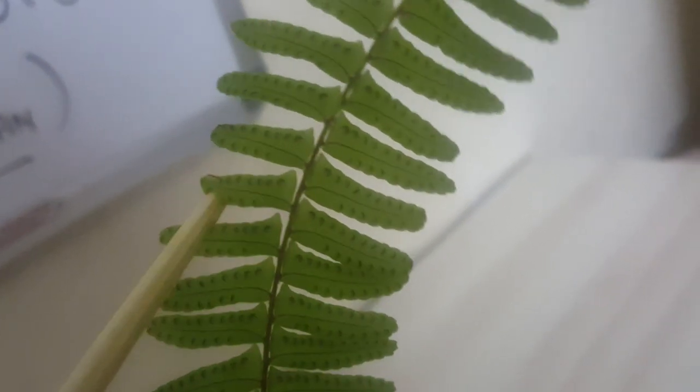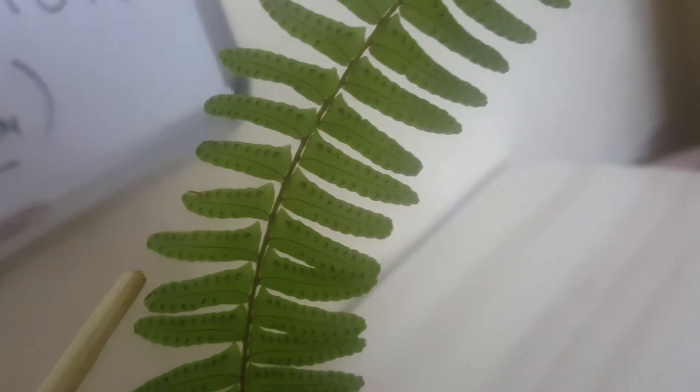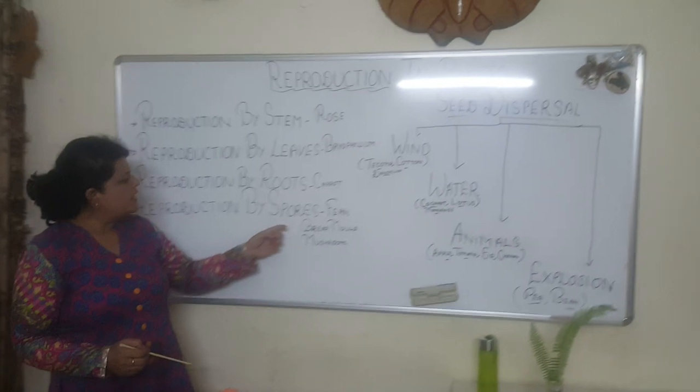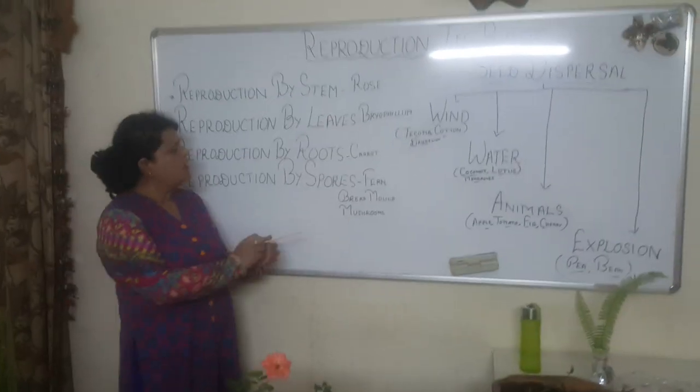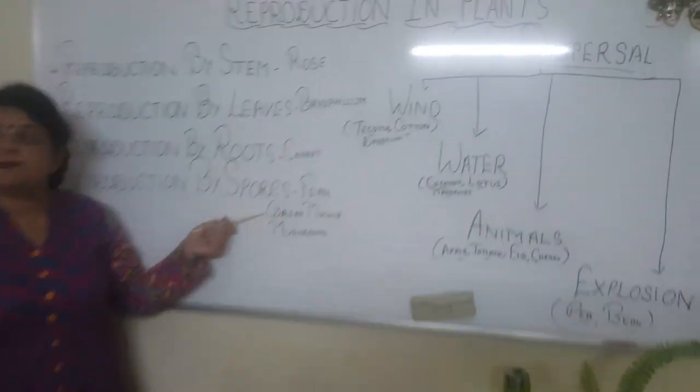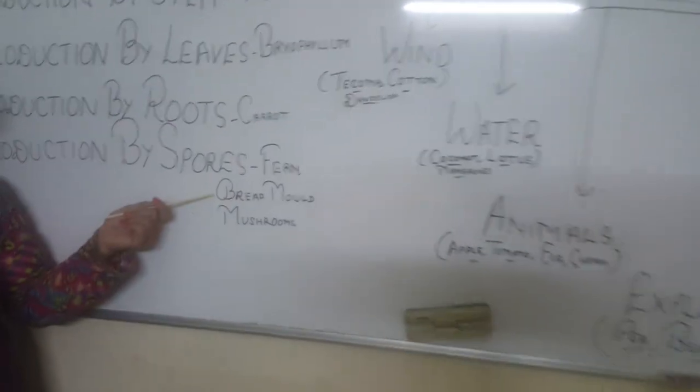All the black dots you can see — these are all the spores. In the same way, reproduction is done in bread mold.